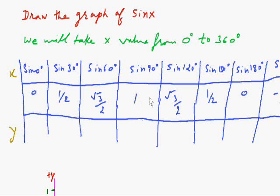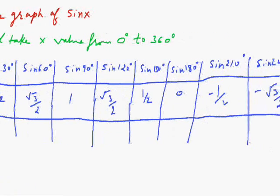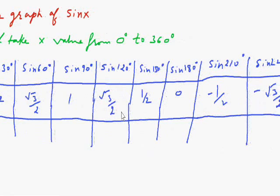Then again these values will repeat. Sin 90 will be 1, sin 120 will be square root 3 divided by 2, sin 150 is 1 divided by 2, and sin 180 is 0 degree.